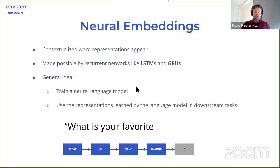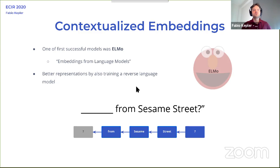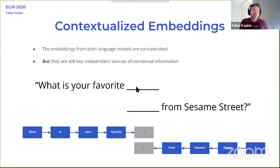Then we started having progress on recurrent networks like LSTMs, which came into the spotlight some years ago. The idea was that you could pre-train a language model and then use those representations in your model. This became quite popular through ELMo, which was an embeddings learning model using bidirectional LSTMs — a normal language model and a reversed language model. ELMo would concatenate both. However, you need to compute this as a priority, so you use this model to learn the representations and then use the same computation when applying them to your downstream model.